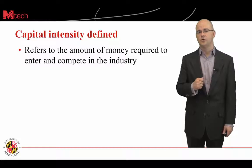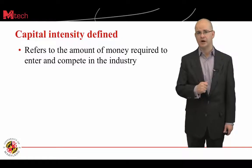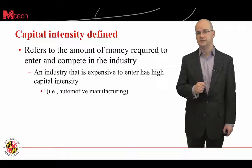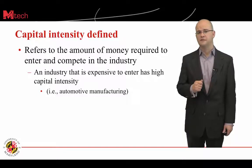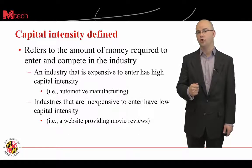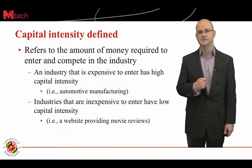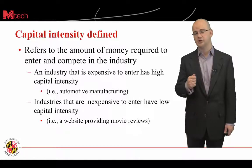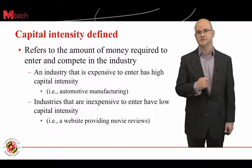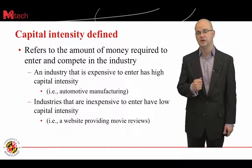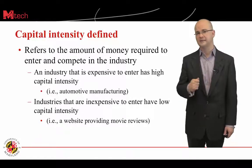When we look at capital intensity, we're interested in the amount of money required to enter and compete within an industry. Industries with high capital intensity include things like automotive manufacturing. Industries with low capital intensity would be something like a website you start to provide movie reviews — for perhaps ten dollars you could launch a site using a website builder. If you can use Microsoft Word, you can build a site, watch movies, and post reviews. Very easy and inexpensive to start — very low capital intensity.